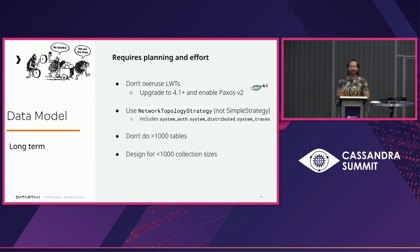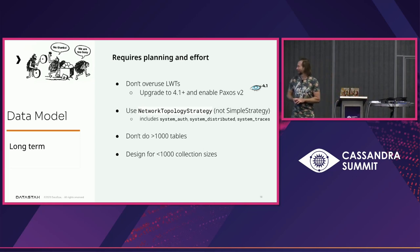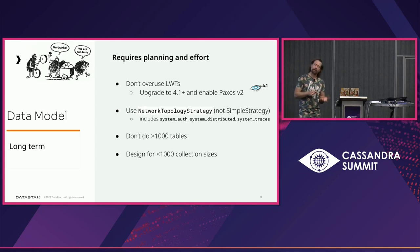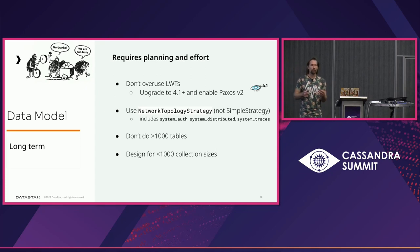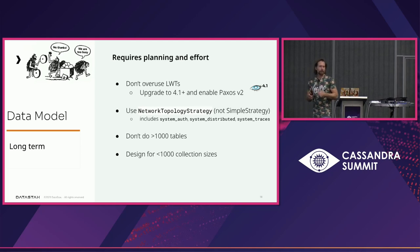Long-term data model issues: don't overuse lightweight transactions — they hit contention and timeout. If you have many lightweight transactions, upgrade to 4.1. Note that upgrading to 4.1 does not automatically use Paxos v2; you need to run some manual commands. Paxos v2 halved the number of network round trips from four to two — a huge improvement. Don't go beyond a thousand tables, and design collections to have fewer than a thousand entries; the hard limit is 64K but in practice exceeding a thousand at design time leads to pain in production.